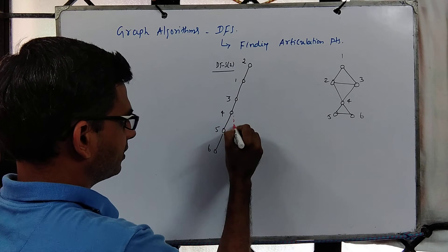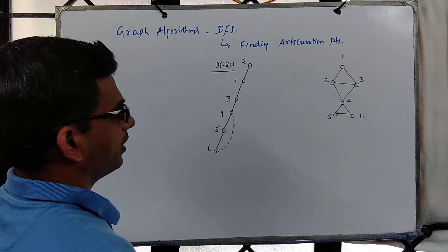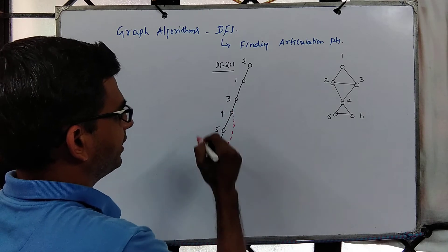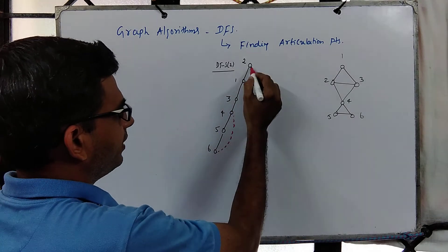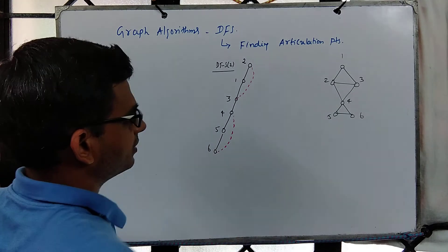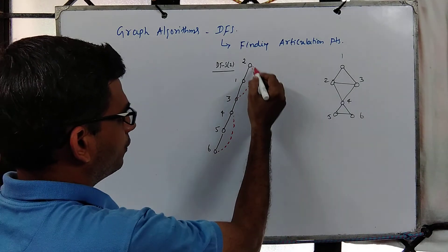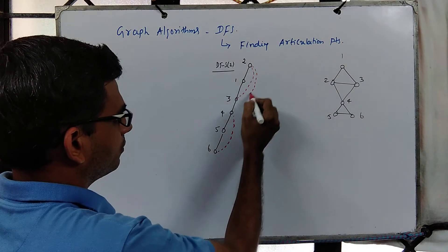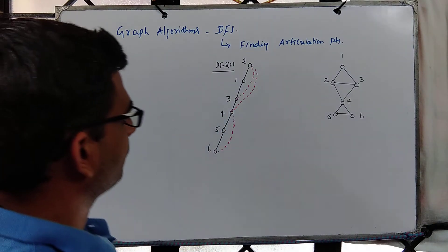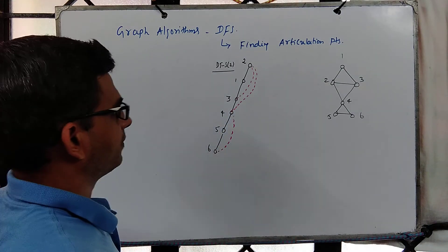4 to 6 there is a missing edge. 3 to 4 is a tree edge. 2 to 3 there is a missing edge, and 2 to 4 there is a missing edge. That is all right, so rest are all covered.